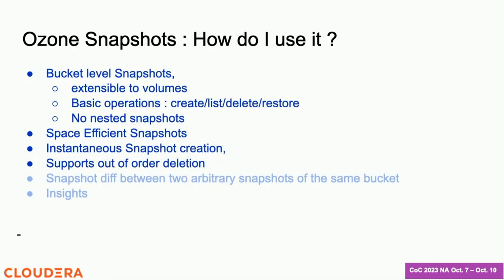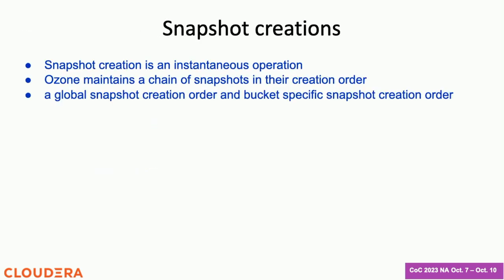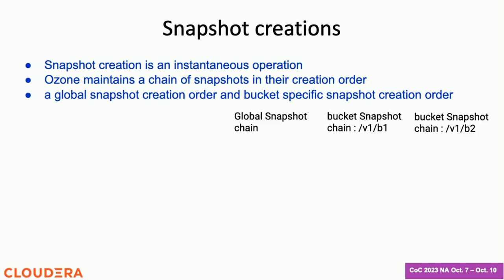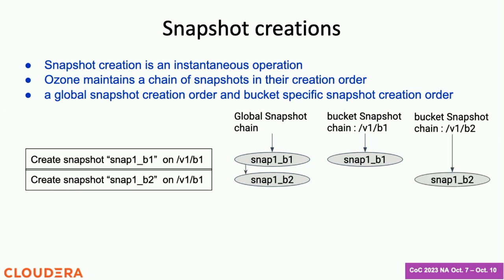Let's look at some primitives we provide. Snapshot creation is an instantaneous operation — regardless of your underlying dataset size, even 100 petabytes, when you issue a snapshot create it is pretty much instantaneous. For smaller data sets it's sub-second; for very large datasets like 10 petabyte-plus, you are looking at single-digit seconds. Internally, Ozone maintains all these different snapshots in time order. We maintain a chain of snapshots at the individual bucket level as well as at a global level. If I create snapshot Snap 1 on bucket B1, I have a local chain at bucket level B1 and also a global chain system-wide.